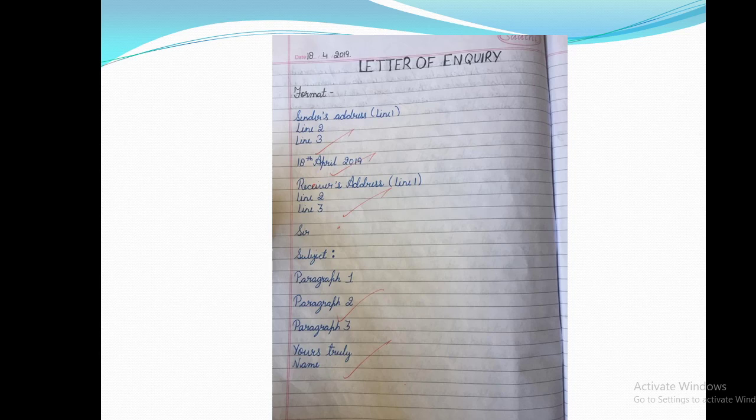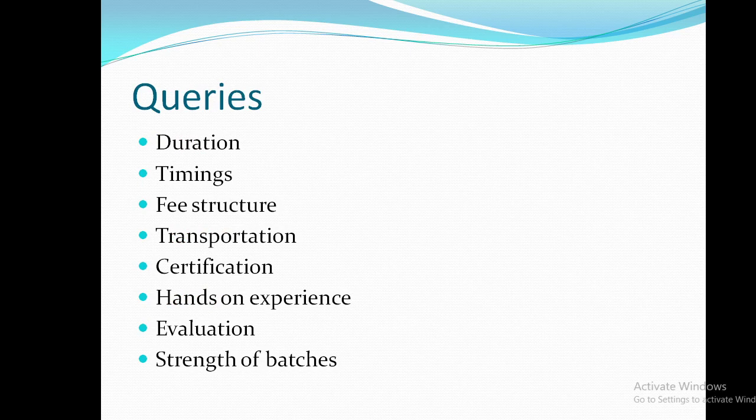Let's see what queries we should write in the second paragraph. First is the duration — the time duration of the course. Second, we ask about the timings of the batch, as you need to pick timings that suit you. Next, we ask about the fee and fee structure. We also ask about transportation facilities. Then comes certification — we inquire whether the course is a certified course and which institute or university has certified it.